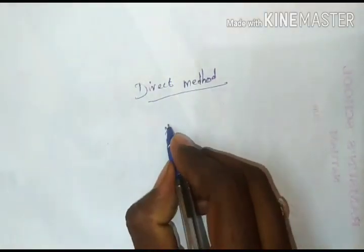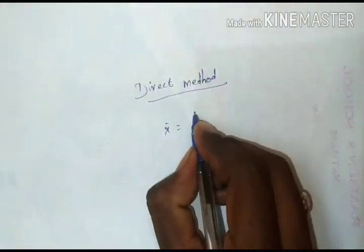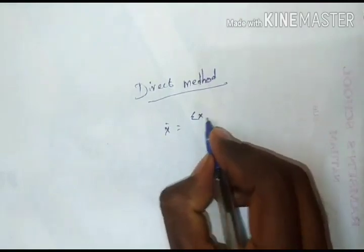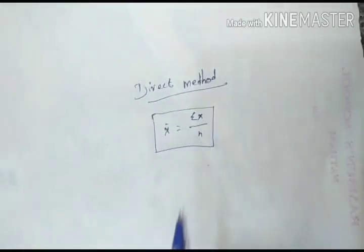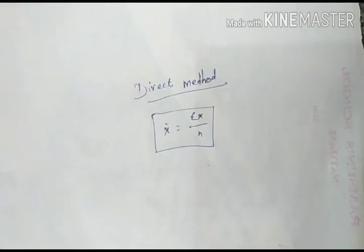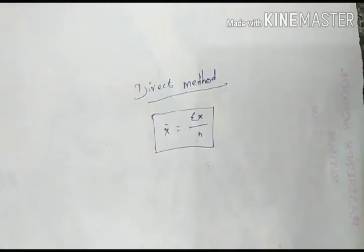For the direct method, x̄ = Σx ÷ n. This is a very simple formula. Σx means the sum of all x values divided by n, the number of observations — how many numbers are given as x values.